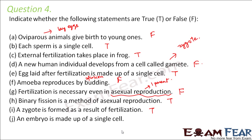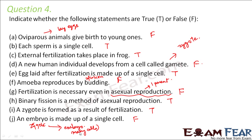An embryo is made up of a single cell — that is false. It is not an embryo but a zygote which is made up of one cell. This zygote then undergoes repeated divisions to form the embryo, which is made up of many cells. So the embryo has many cells but the zygote has just one cell.